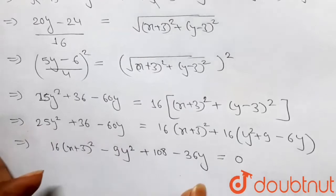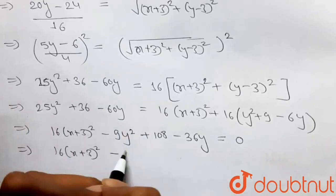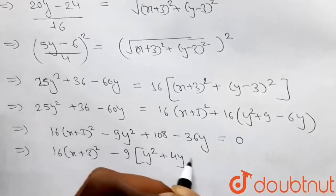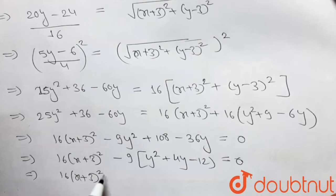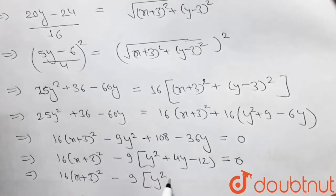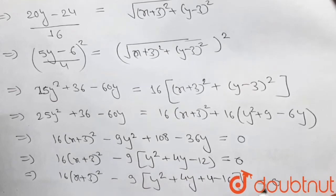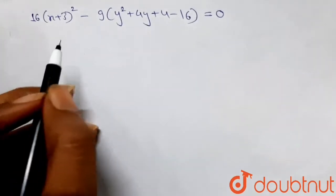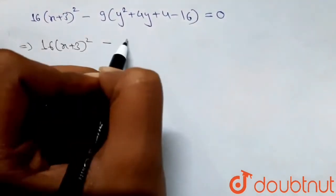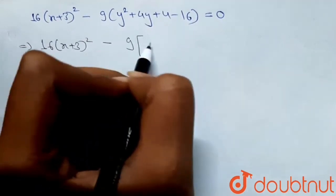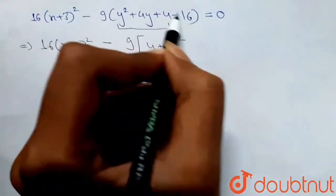Factoring: 16(x+3)² - 9(y² + 4y - 12) = 0. We can rewrite y² + 4y - 12 as y² + 4y + 4 - 16, which is (y+2)² - 16. So we have 16(x+3)² - 9[(y+2)² - 16] = 0, which gives 16(x+3)² - 9(y+2)² + 144 = 0.